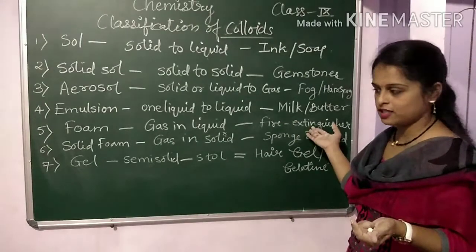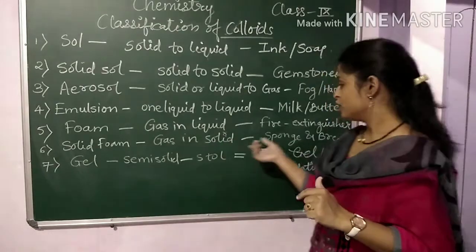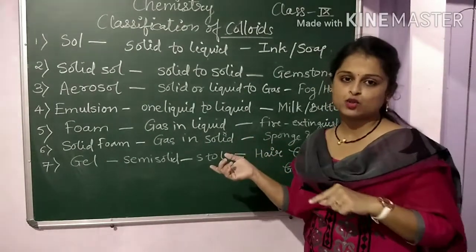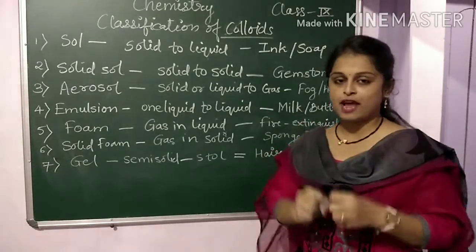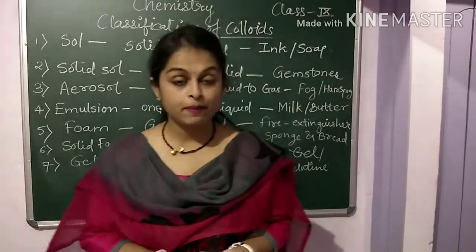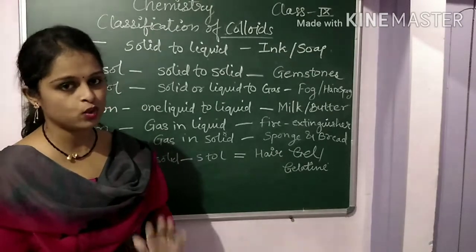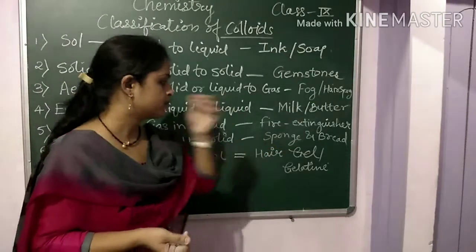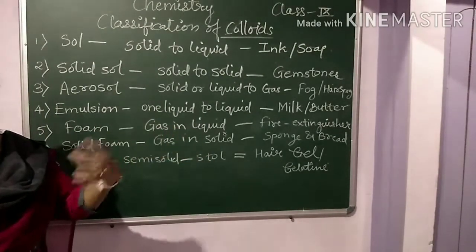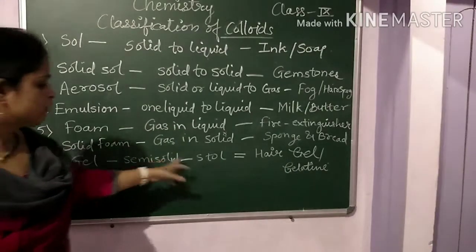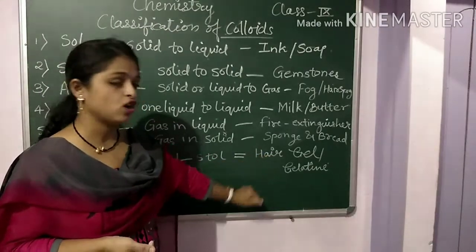Another type is solid foam, which forms when gas mixes with a solid. We recently studied about baking soda and the preparation of bread and cakes — carbon dioxide gas is trapped in the dough, forming the bread. And gel is a semi-solid substance, neither fully solid nor fully liquid. When solid is added into a liquid, it forms a gel. Examples are hair gel and gelatin.